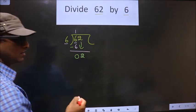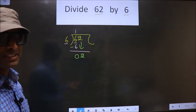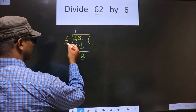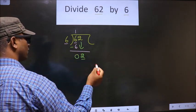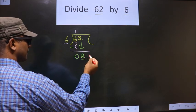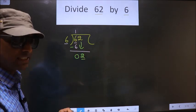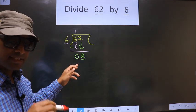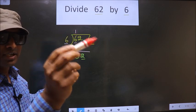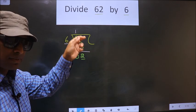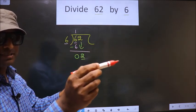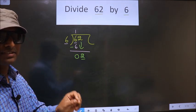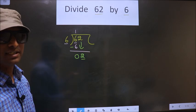Now here is what many do as a mistake. See, the number 2 is smaller than 6. So what they do is, they put the decimal here and take 0 here, which is wrong. You brought the number down — in the same step, you cannot put decimal and 0. Bringing the number down, placing decimal, and taking 0 both in a single step is wrong.